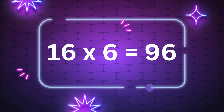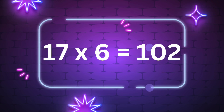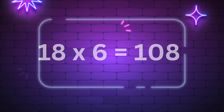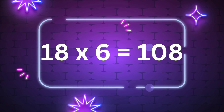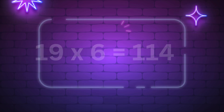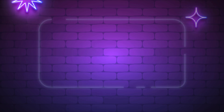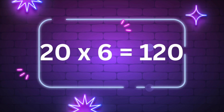Sixteen times six is ninety-six. Seventeen times six is a hundred and two. Eighteen times six is a hundred and eight. Nineteen times six is a hundred and fourteen. Twenty times six is a hundred and twenty.